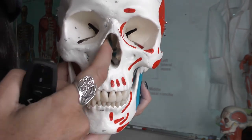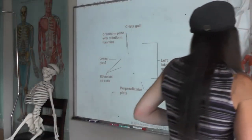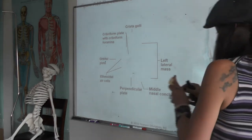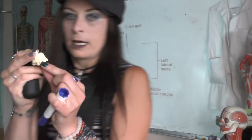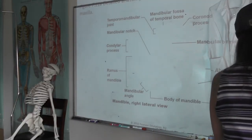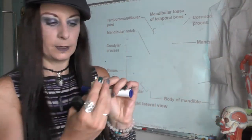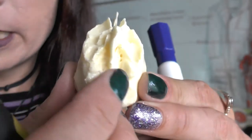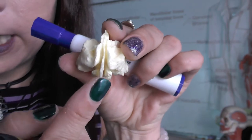You can see we've got a superior, middle, and inferior nasal concha. And that's coming from our middle nasal concha right here. We can also see our perpendicular plate. There's the cribriform plate, here's the crista galli, here is the perpendicular plate, and there's the middle nasal concha.